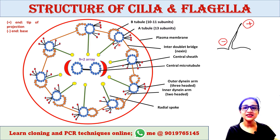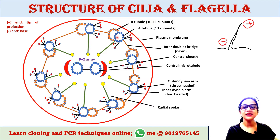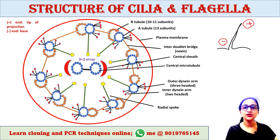Each peripheral doublet consists of one complete microtubule called the A tubule and one incomplete microtubule called the B tubule. The A tubule (shown in blue) contains 13 subunits, while the B tubule contains only 10 to 11 subunits, making it incomplete.